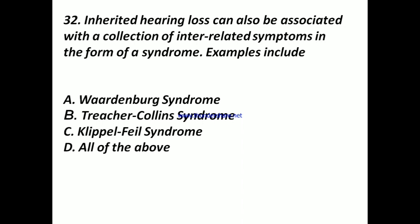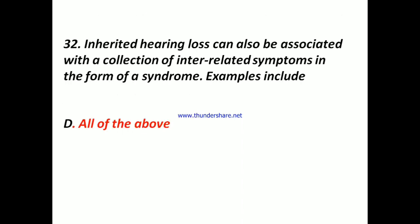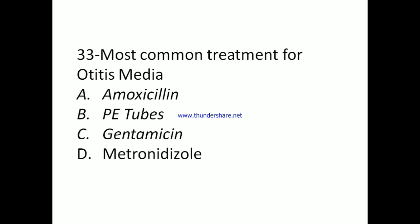Question 32: Inherited hearing loss can also be associated with a collection of interrelated symptoms in the form of a syndrome. Examples include: A) Waardenburg's syndrome, B) Treacher-Collins syndrome, C) Klippel-Feil syndrome, D) All of the above. Answer: D) All of the above.